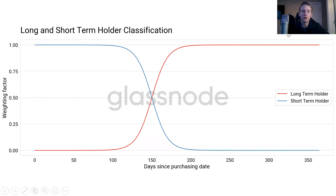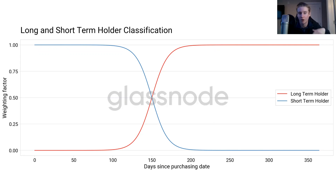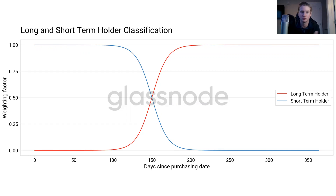Next, we look at the long and short-term holder classification. This is looking at the weighting factor that's given to classify an entity as a long or short-term holder. There's not a hard stop at 155 days — we have a smoothing transition across a 10-day window, from 145 days to 165 days. This is so that you don't see an immediate transition as soon as an entity hits 155 days. You have this smoothing or weighting factor to have a smooth transition between both cohorts.